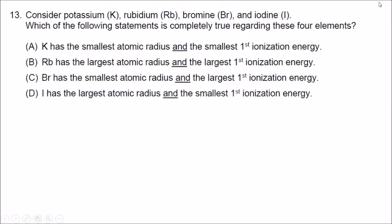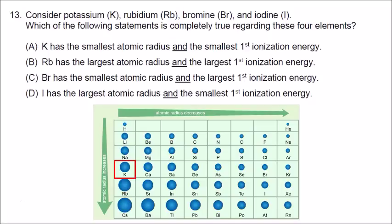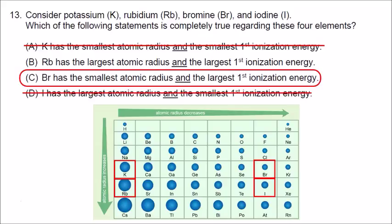Number thirteen considers four elements: potassium, rubidium, bromine, and iodine. Bromine should be the smallest and rubidium should be the largest. In terms of the top-right corner, bromine is the smallest; in the lower-left corner, rubidium is the largest. So the correct answer is either B or C based on size. Since bromine is the smallest, it should have the largest ionization energy because it's more difficult for bromine to lose electrons. Correct answer is C.